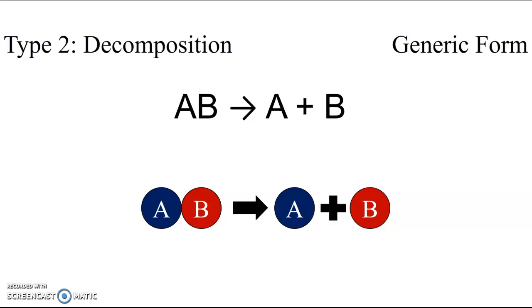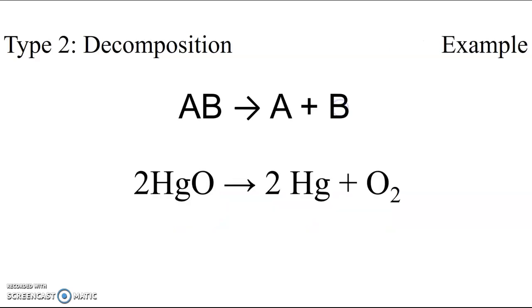The second type of reaction listed in your reference tables is the decomposition reaction, which is listed as the compound AB reacting to form the elements A and B. Decomposition is often thought of as the reverse of the synthesis process, because we go from having a single reactant compound to having multiple product elements.